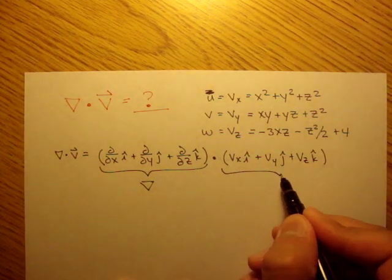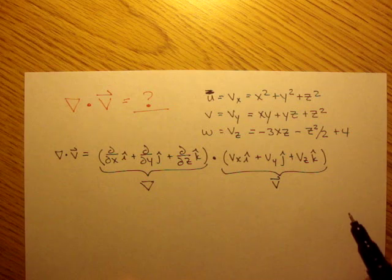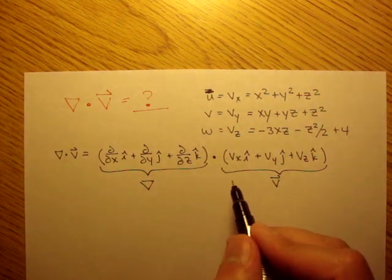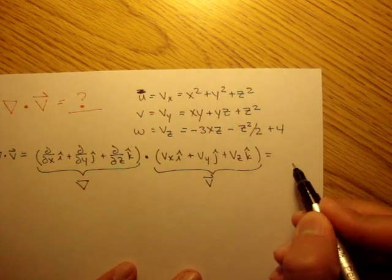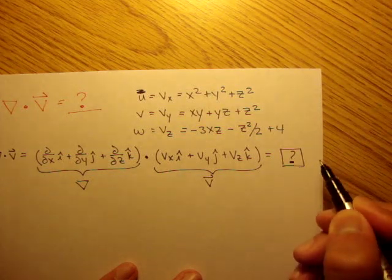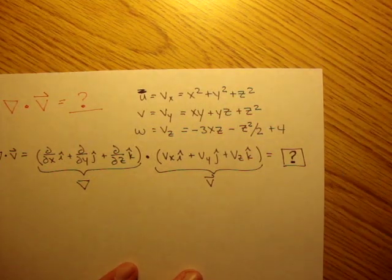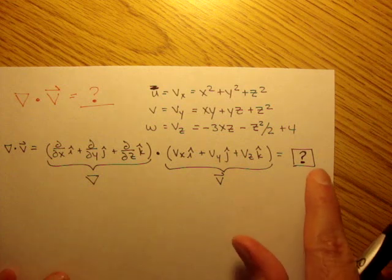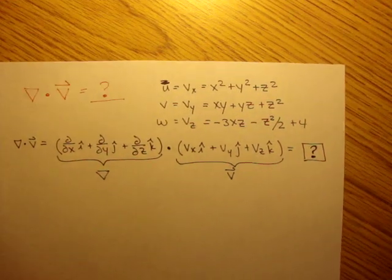And this right here is your velocity flow field. So we're dotting these two, and we want to know what this number is. We'll use the question mark. That's the dilation rate. We want to know the dilation rate.